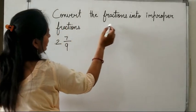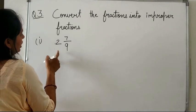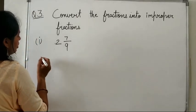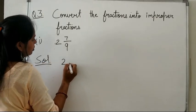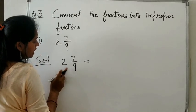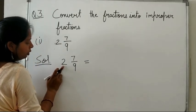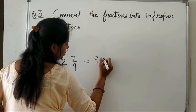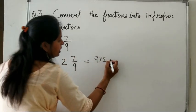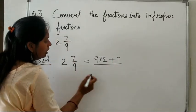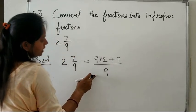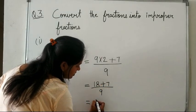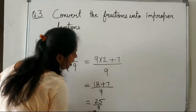Question 3: convert the mixed fractions into improper fractions. For 2 and 7 upon 9, we multiply the denominator by the whole part: 9 × 2 = 18, then add the numerator 7, giving 18 + 7 = 25, over the denominator 9. So 2 and 7 upon 9 equals 25 upon 9, which is an improper fraction.